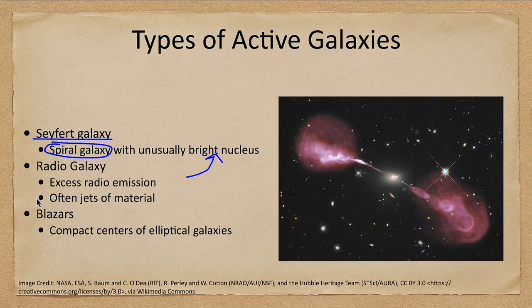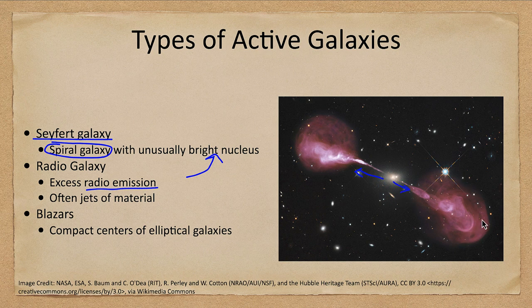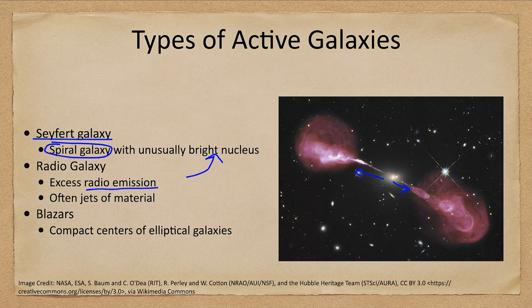We also have radio galaxies. A radio galaxy, as you might guess, has excess radio emission. They also often have jets of material streaming out, and here we see jets streaming away along with the radio lobes of material where this has struck the intergalactic medium — the medium between the galaxies. This is a combination image looking at visible light for the background image with the galaxy and background galaxies and stars, as well as the radio image showing the radio lobes of this material.